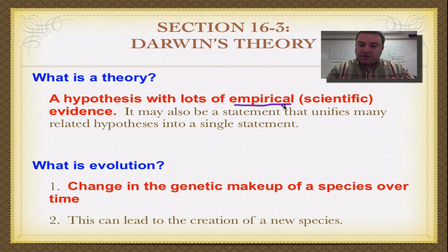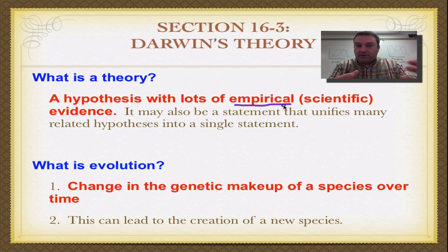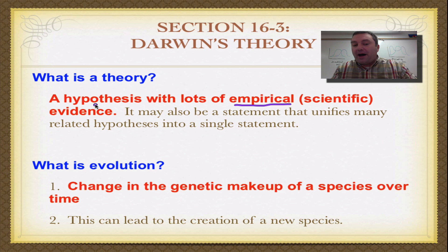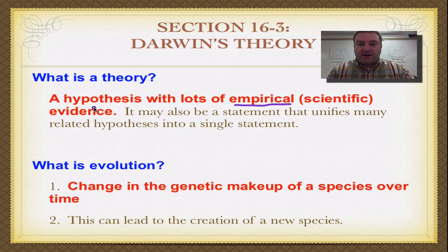Your textbook uses it as a statement that unifies many related hypotheses — you can put them under one theory. Your textbook also uses a concept of a well-tested explanation, which is basically a fancy way of saying a hypothesis with lots of scientific evidence. So a theory in science is a very, very powerful statement. It truly means something. It's something very concrete.